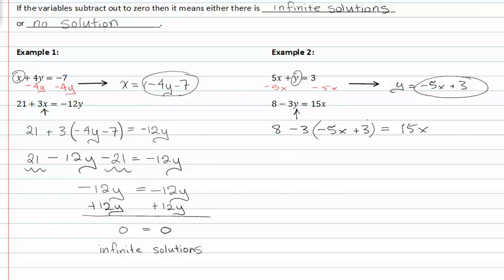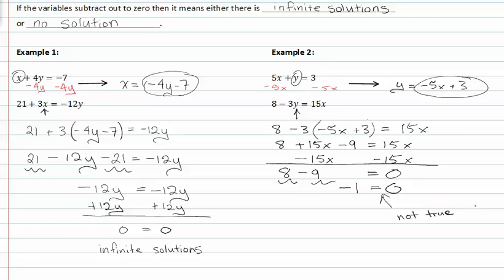Distributing my negative 3 I get eight plus 15x minus nine is equal to 15x. If I subtract 15x from both sides, I get eight minus nine is equal to zero. At this point, I can add like terms together which would give me negative one is equal to zero. Notice that this is not true, because negative one does not equal zero. So we can say that there are no solutions.